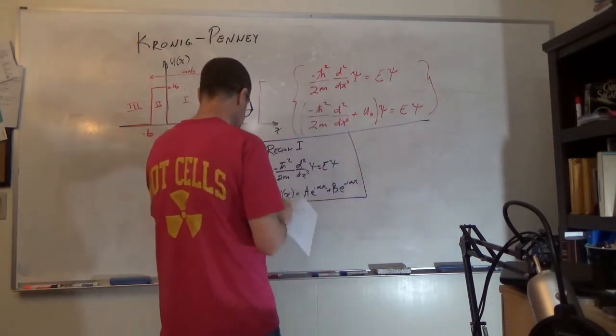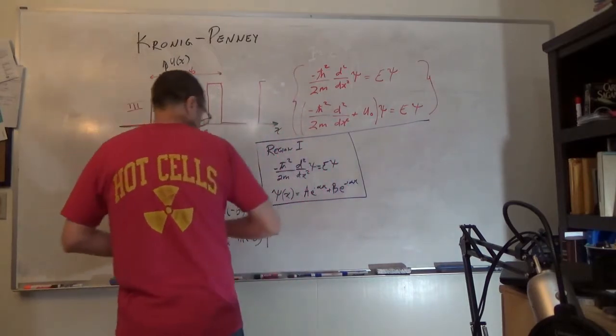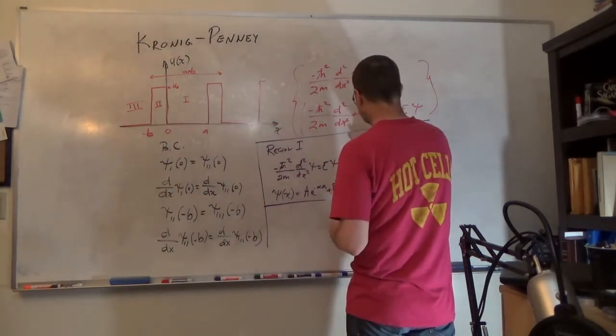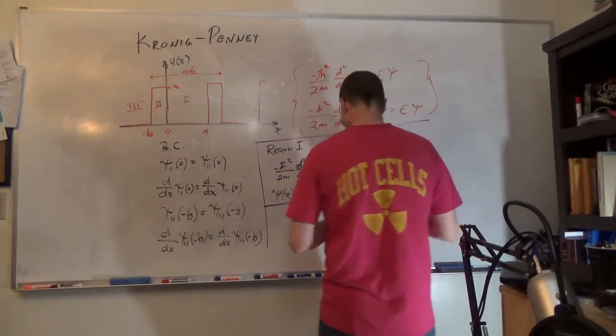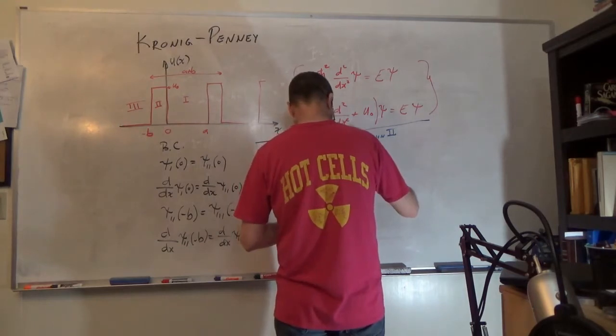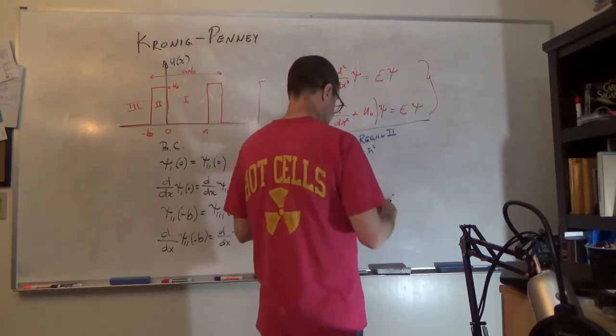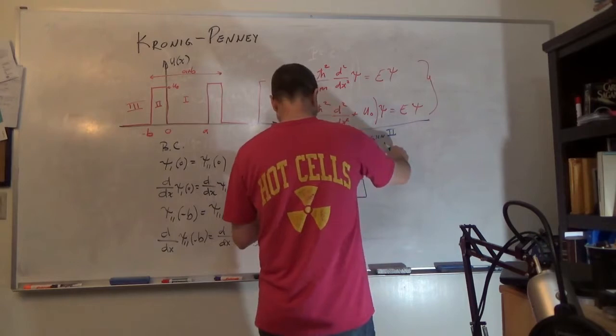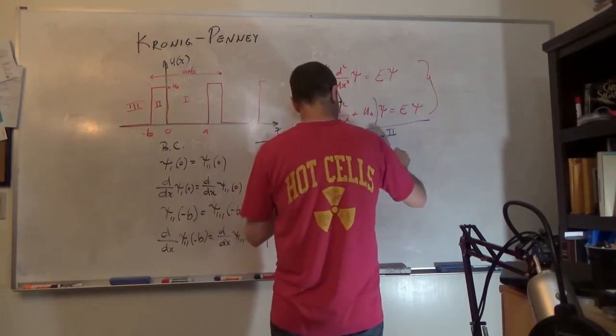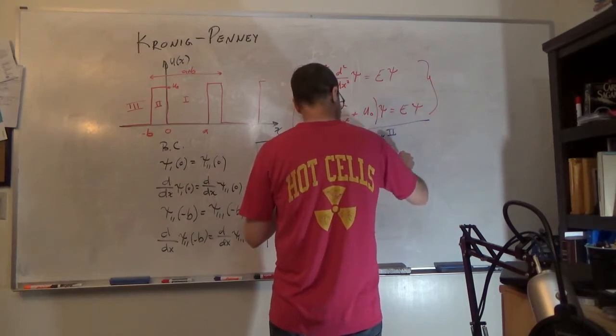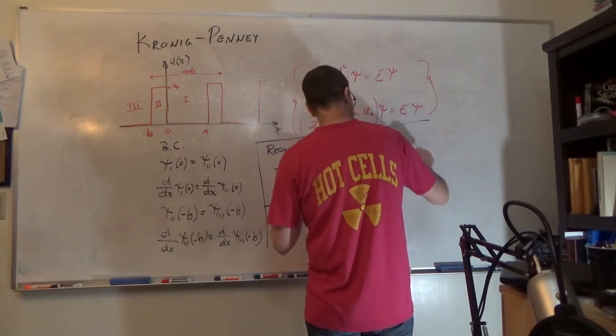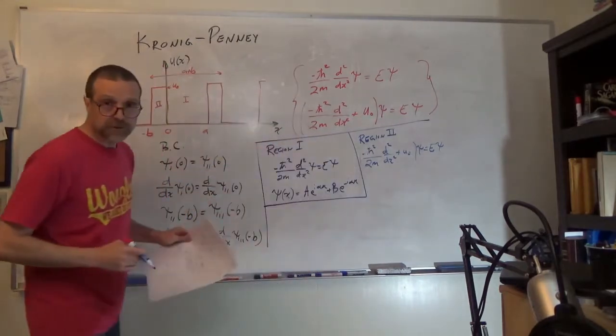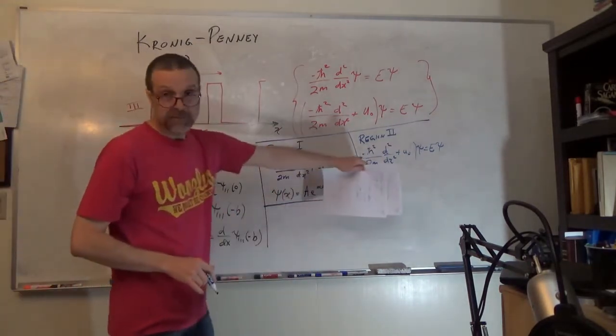And next, we'll solve region 2. So region 2, we have negative h bar squared over 2m d squared dx squared plus u naught psi is equal to E psi. Now, there's actually two regimes for this solution.